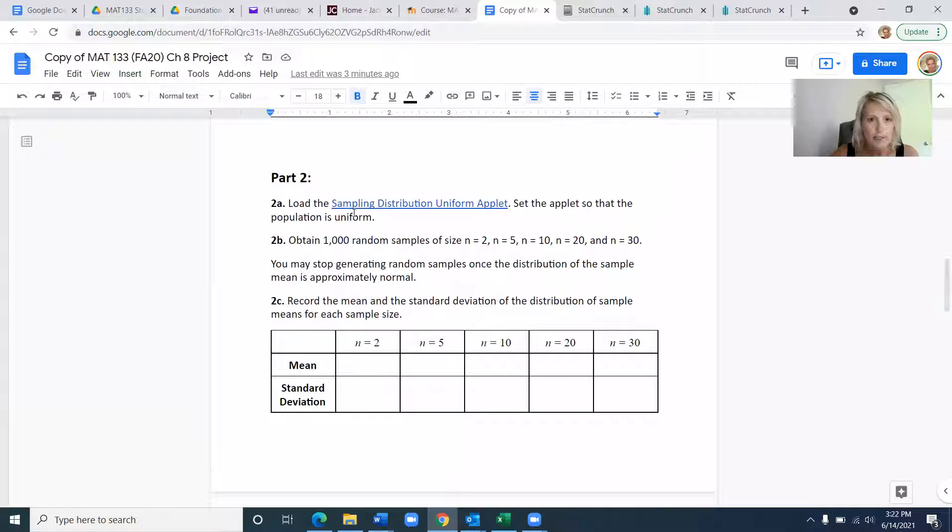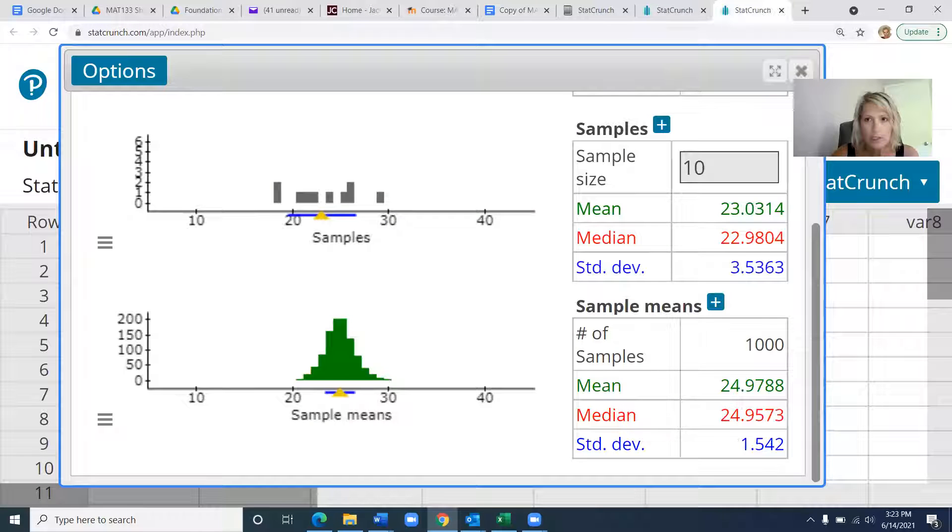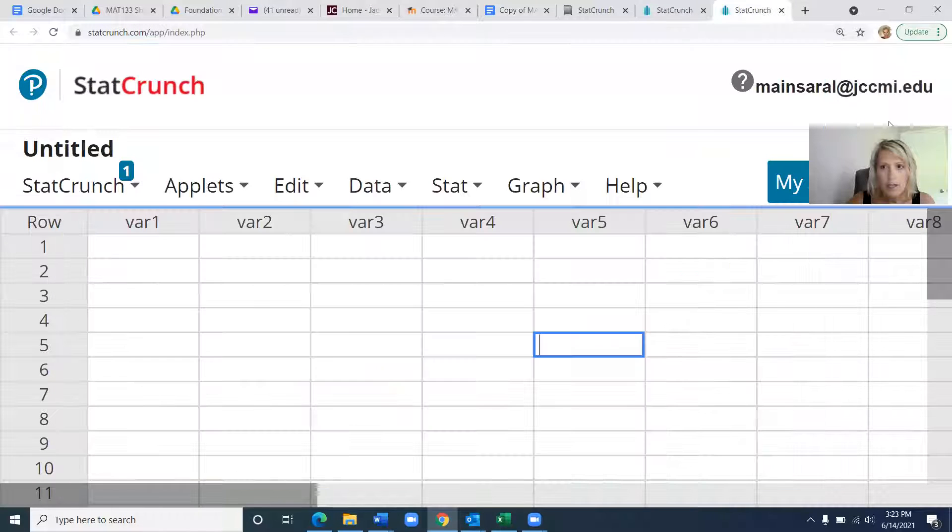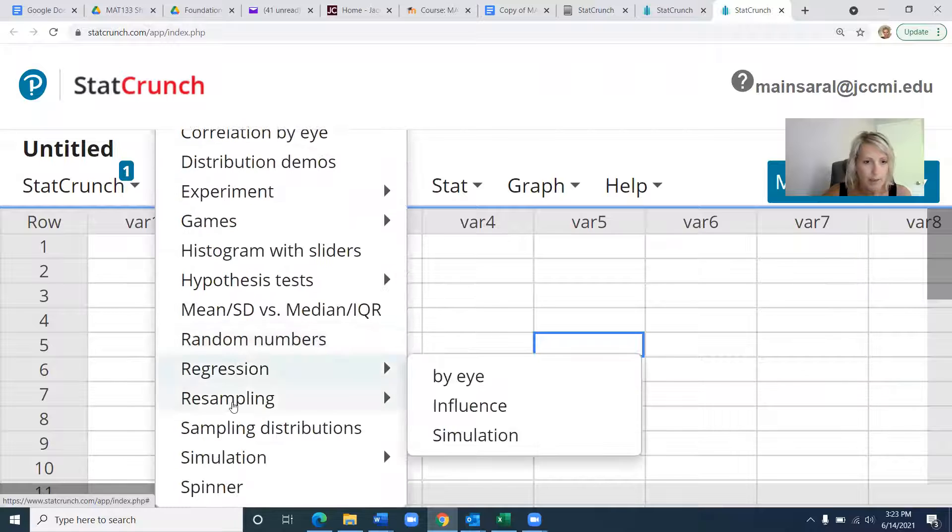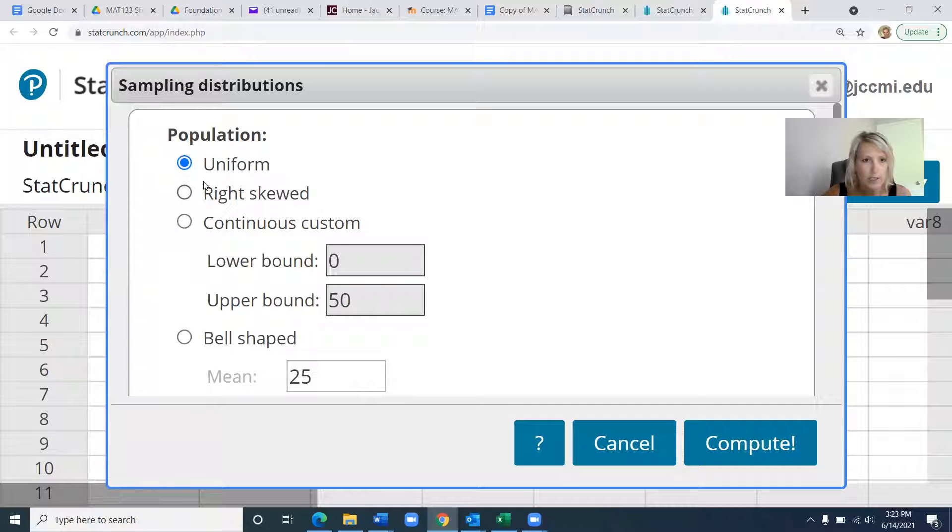Now it says load the sampling distribution uniform applet. You're going to go back to StatCrunch and go to the same applet, the sampling distributions, and you're going to click on the uniform, which is the top one, and hit compute.